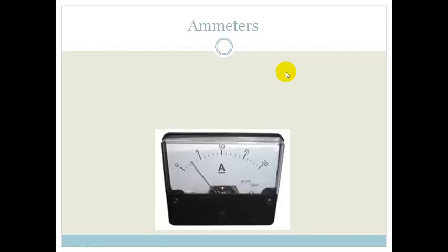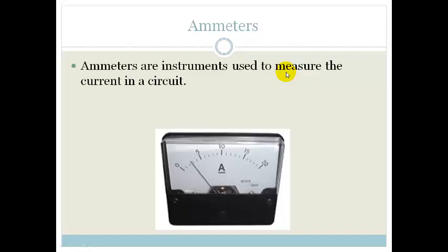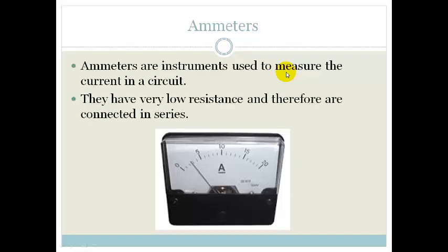What do we use to measure our current? Obviously, we measure using an ammeter. Now, ammeters have got a very low resistance compared to voltmeters. Remember the voltmeters? Very high resistance. Ammeters, very low resistance, and therefore are connected in series.